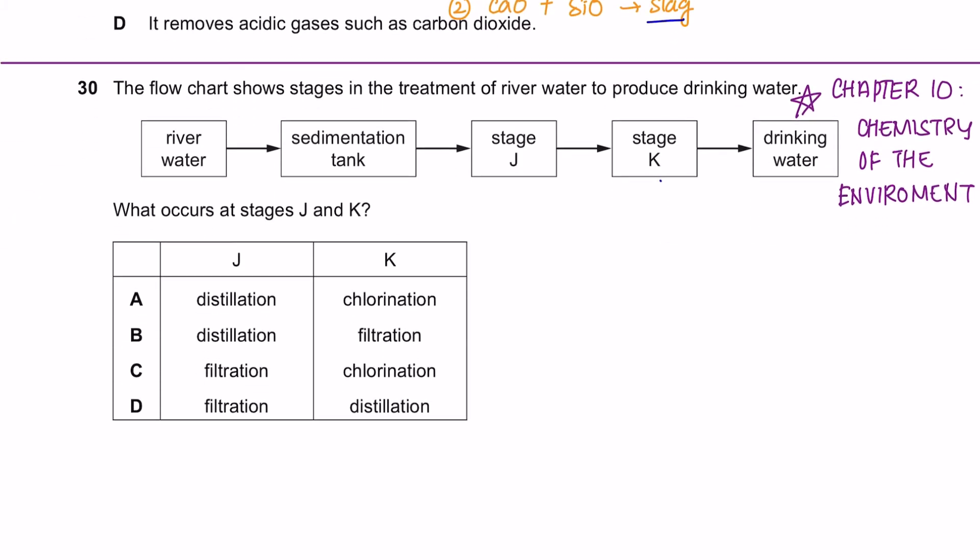Question 30 onwards is from chapter 10. The flowchart shows stages in the treatment of river water to produce drinking water. What occurs at stages J and K? As long as you're familiar with the syllabus, you should be able to answer this easily.